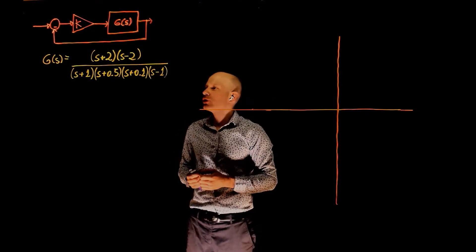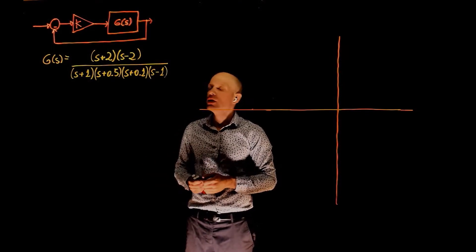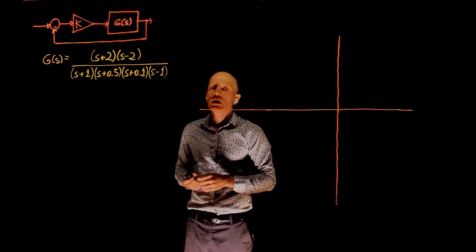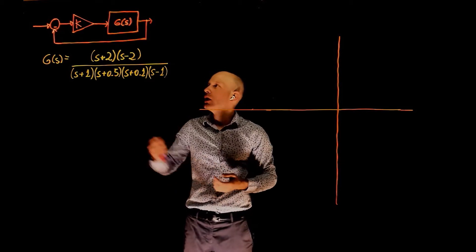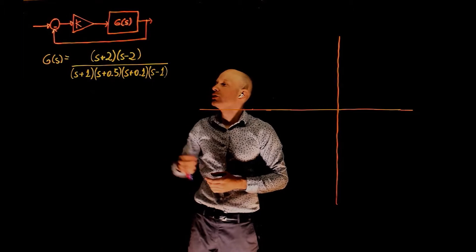In this example, the plant's transfer function has four poles and two zeros, and you're again interested in determining the location of the poles of the closed-loop transfer function as this control gain k goes from zero to infinity.